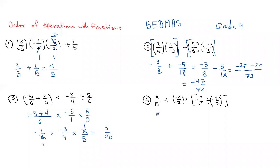So I'm going to go 3/5 plus negative 2/3 times - I'm going to change this to multiplication because 4 times...